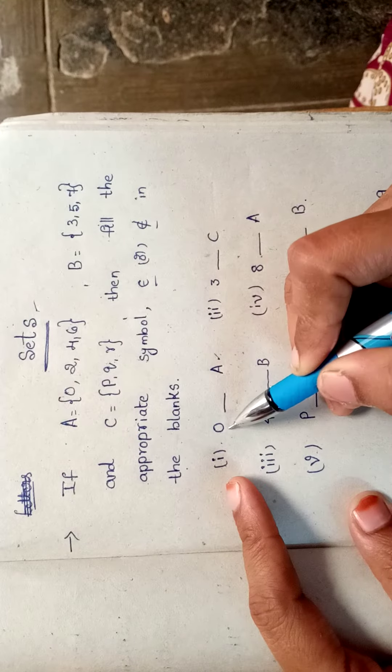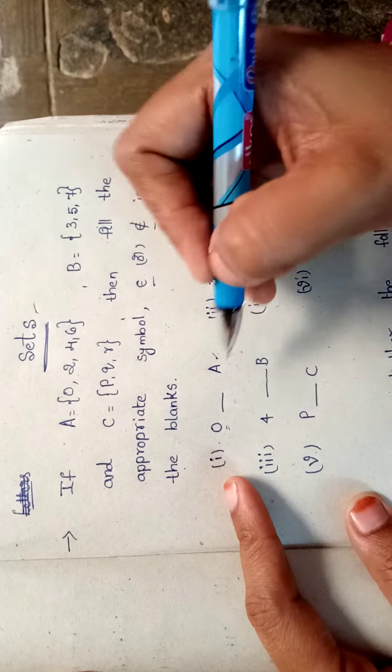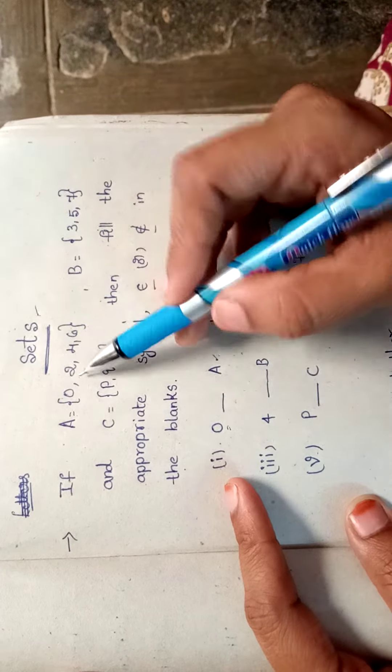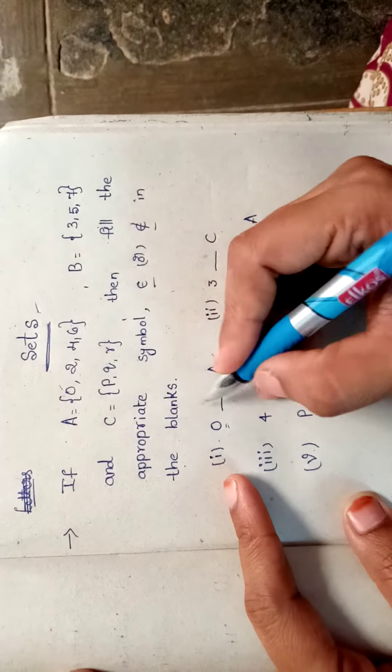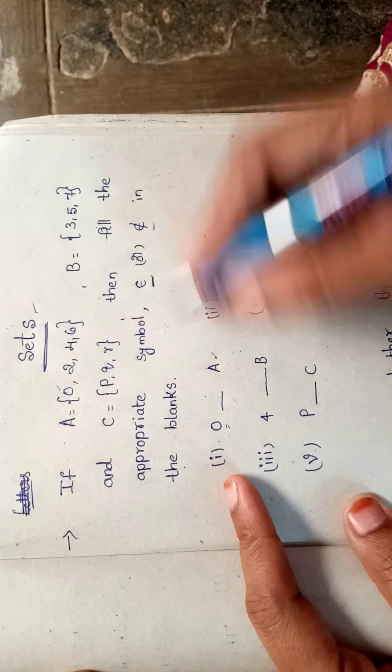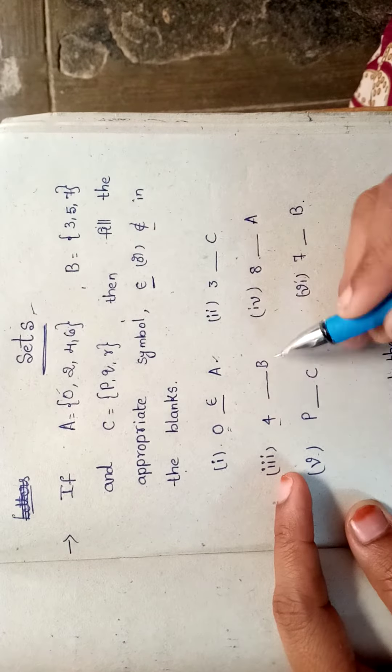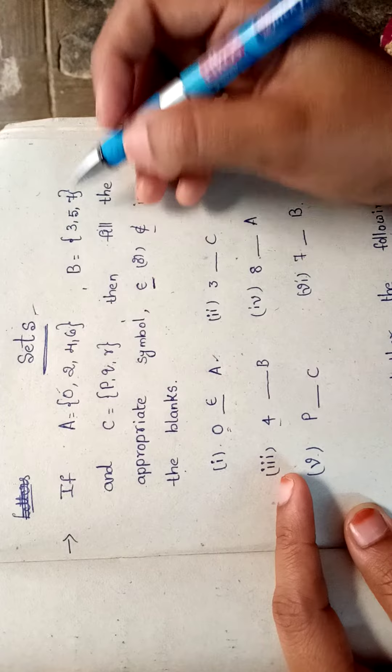First, does zero belong to A or not? Let us check. Zero is in the set, yeah. So we can write the symbol 'belongs to.' Next, is four in the set B? We have to check.